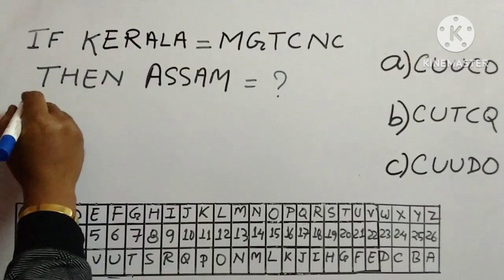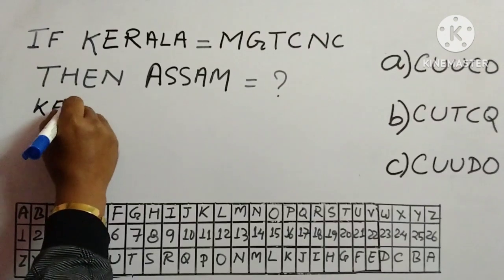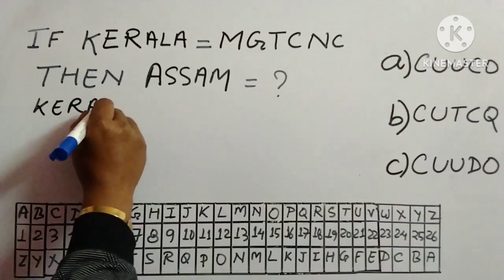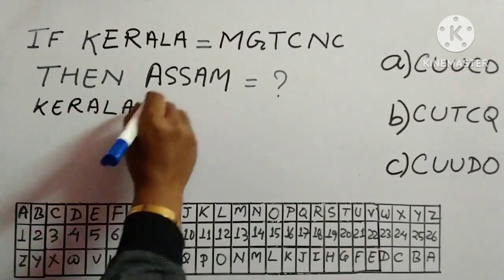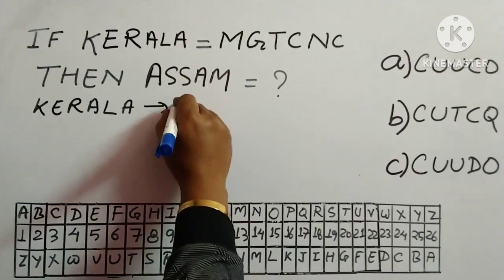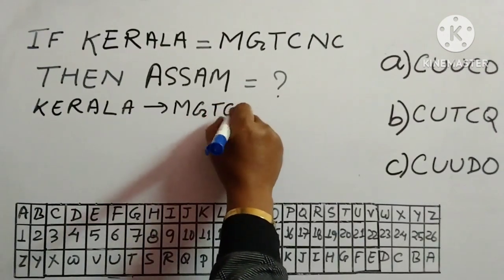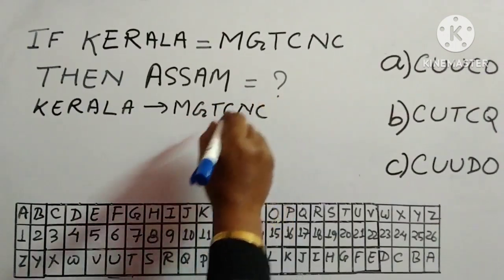Then we will write this one Kerala. So K, E, R, A, L, A and write down the word given M, G, T, C, N, C.